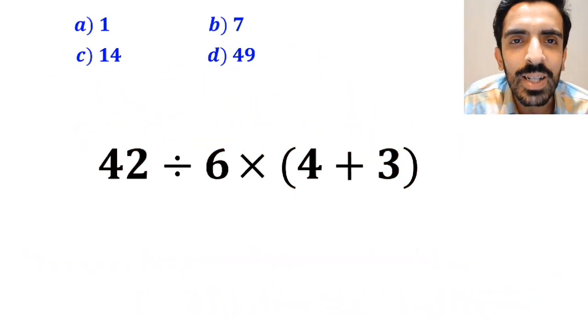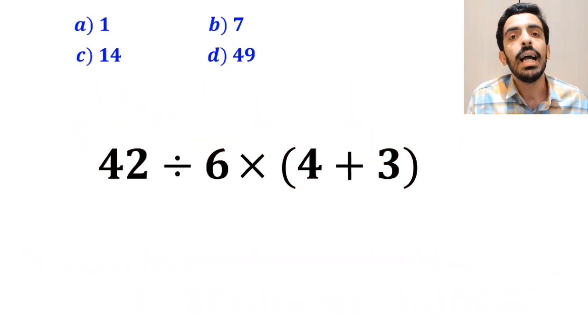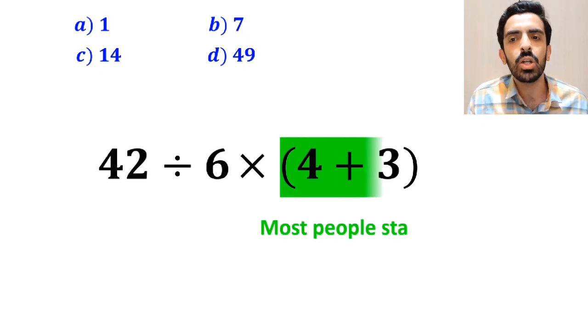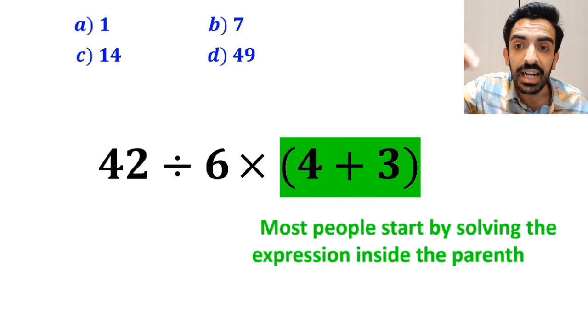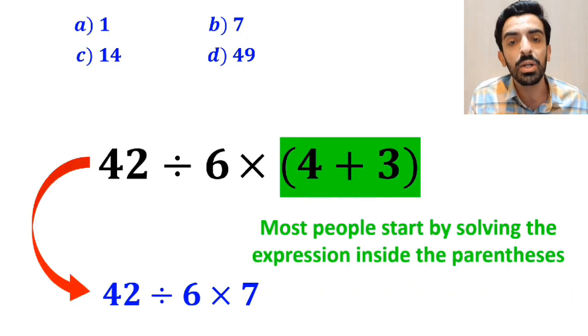Let's take a closer look and solve it together. In the first step, most people start by solving the expression inside parenthesis and replace it with 42 divided by 6 then multiply it by 7.